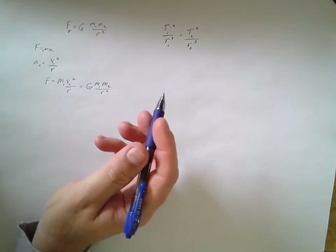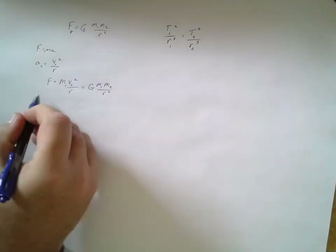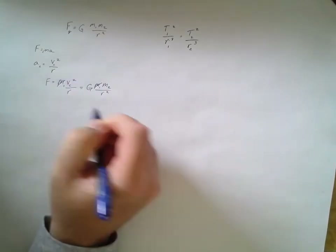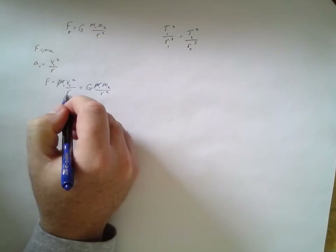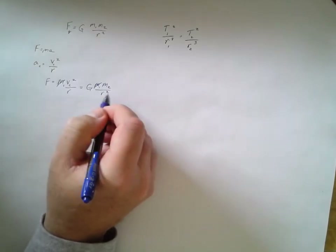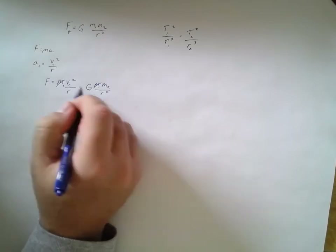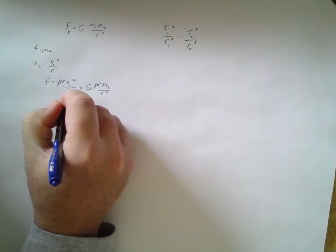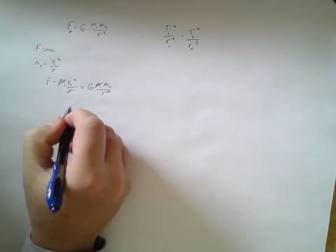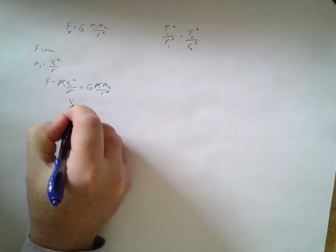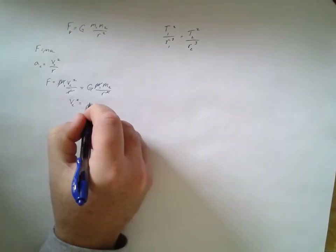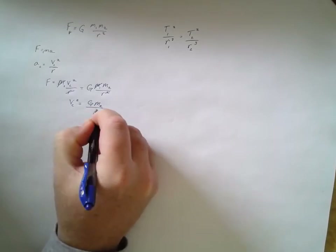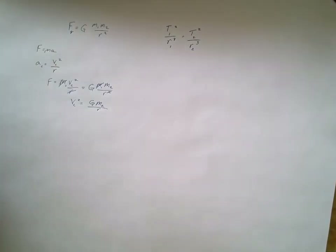Cleaning this up: m1 cancels with m1, and one r cancels from each side. This simplifies to v_c squared equals G times m2 over r. That's our simplified result — but we still need to know what v_c actually is.